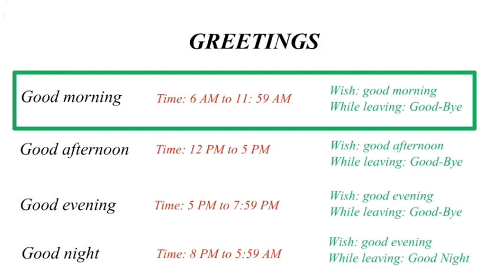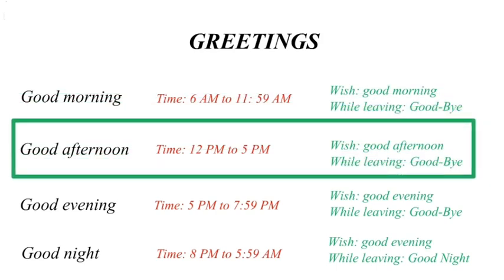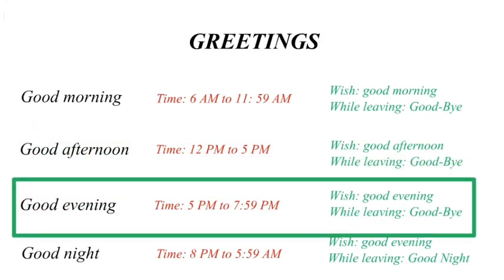Between 6 AM in the morning to 11:59 AM you may greet anybody with good morning. While meeting you may wish them good morning and while leaving just simply say goodbye. Now from 12 PM to 5 PM you may greet anybody with good afternoon. While meeting them wish them good afternoon and while leaving just wish them goodbye. Now to use the word good evening, the perfect timing is 5 PM to 7:59 PM. This is the time when we wish somebody good evening and we can say goodbye at the time of leaving.